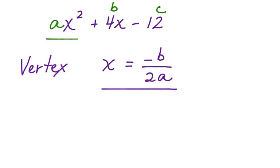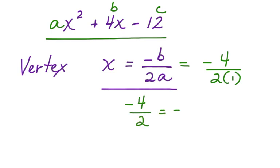So in this quadratic function, a is equal to 1. So we have 2 times 1. b is equal to 4, so you have negative 4. Now, if I do the division, I have negative 4 divided by 2, and I have negative 2. So the vertex of this parabola would be negative 2.